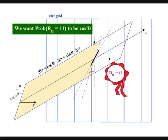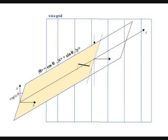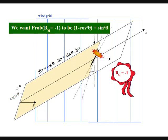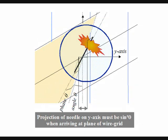And if the needle is in the ket theta state, that means if it is in the state cosine theta times ket x plus sine theta ket y, we want the probability to pass the grid unaffected to be cosine squared theta. Equivalently, this means that the probability to touch a wire of the grid must be 1 minus cosine squared theta, which is sine squared theta, which physically means that the length of the projection of the needle on the y-axis must be sine theta when it arrives at the plane of the wire grid.